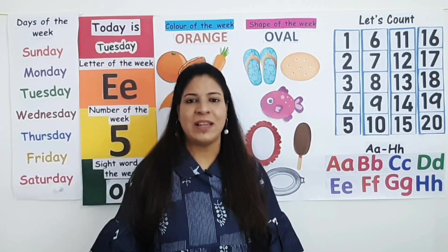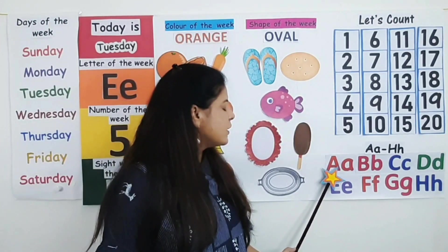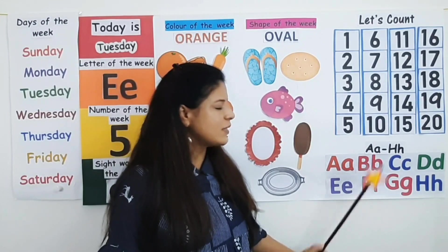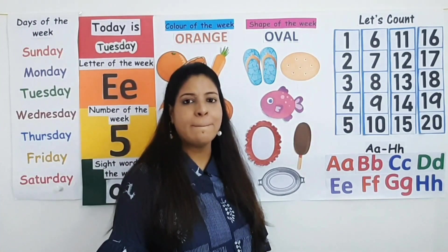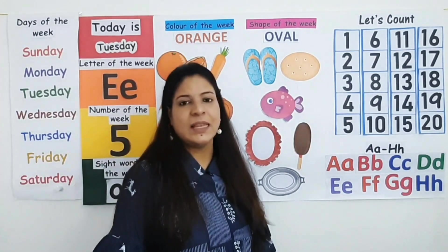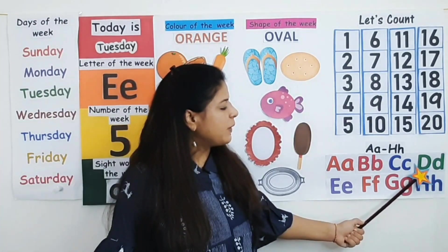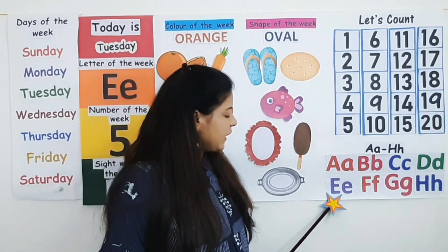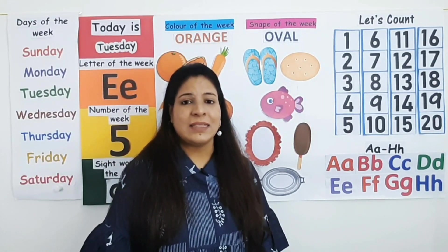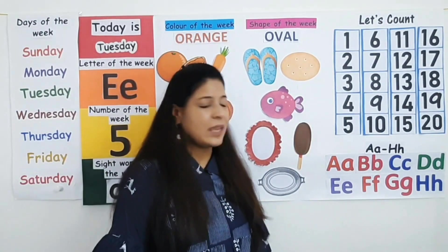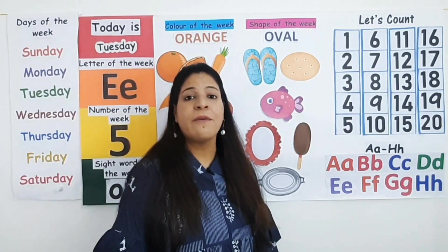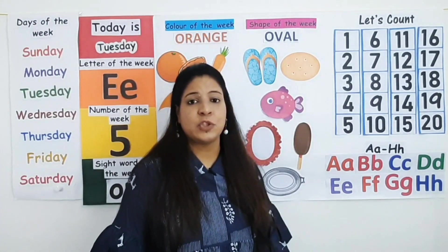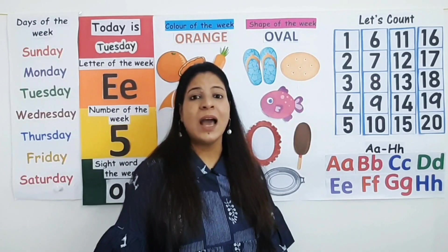Now it's time to say the sounds of letters A to H. Let's start. This is uppercase letter A, this is lowercase letter A — letter A makes the sound A. This is uppercase letter B, lowercase letter B — letter B makes the sound B. Uppercase letter C, lowercase letter C — letter C makes the sound C. Uppercase letter D, lowercase letter D — letter D makes the sound D. Uppercase letter E, lowercase letter E — letter E makes the sound E. Uppercase letter F, lowercase letter F — letter F makes the sound F. Uppercase letter G, lowercase letter G — letter G makes the sound G. Uppercase letter H, lowercase letter H — letter H makes the sound H. Well done.